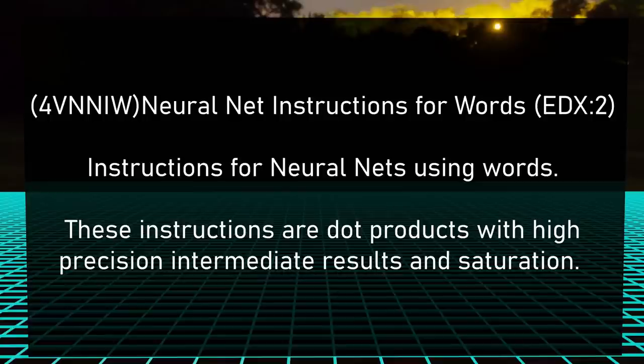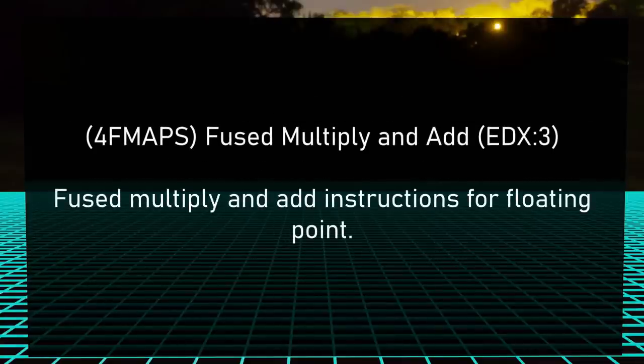Generation 3, Knight's Mill. We've got neural net instructions for words — they're actually useful outside of neural nets, fairly generic, but neural nets is a good way to use them. Intel decided to use that buzzword for this instruction set. CPU ID flag EDX bit 2. Then 4FMAPS: another Fused Multiply and Add instruction set, this one for floating point. CPU ID flag EDX bit 3.